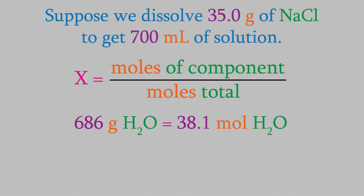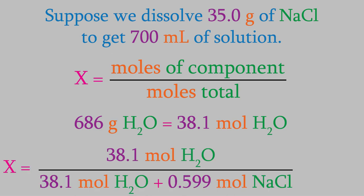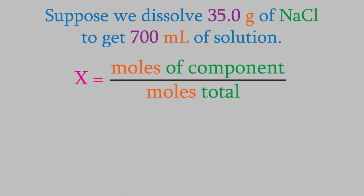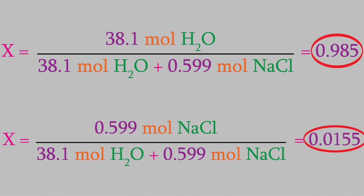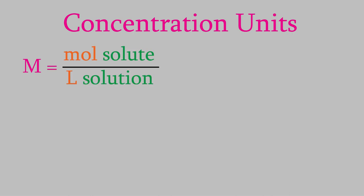The mole fraction of water is 38.1 moles divided by the moles of water plus NaCl, which gives us a mole fraction of 0.985 for the water. Notice that the units all cancelled out, so the mole fraction doesn't have a unit. For the NaCl, the mole fraction is 0.599 moles over the sum of the moles of NaCl and water, giving us a mole fraction of 0.0155. Notice that the mole fractions of all the ingredients add up to give us 1 — that should always be true. The mole fractions for all ingredients in a solution must always total 1.